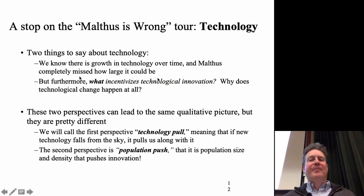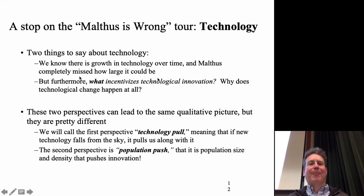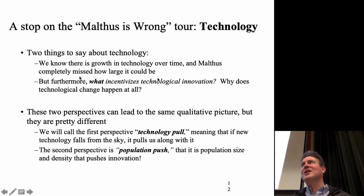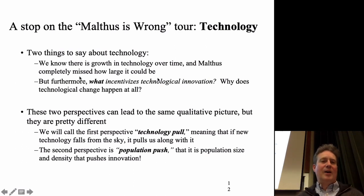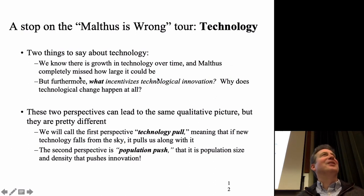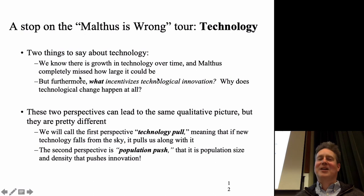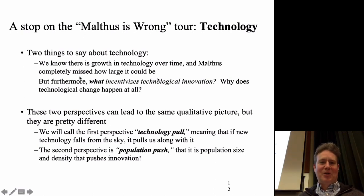There actually is growth in technology over time — something Malthus never saw. The big question is what actually incentivizes technological innovation. Why does it happen and what causes it? If new technology just falls out of the sky — manna from heaven — then technology pulls population along and pushes out a labor demand curve, allowing more population without a Malthusian death trap.